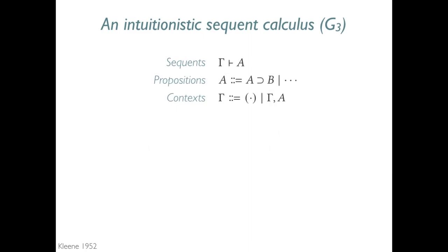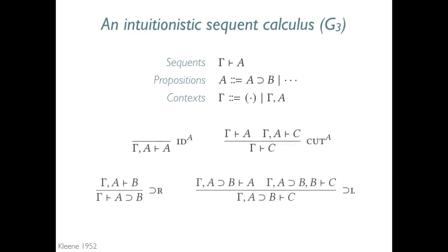We have the usual identity and cut rules, along with the usual right and left rules for implication. In the left rule, notice that the antecedent A implies B is carried over to the two premises.